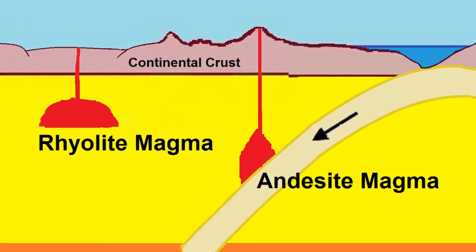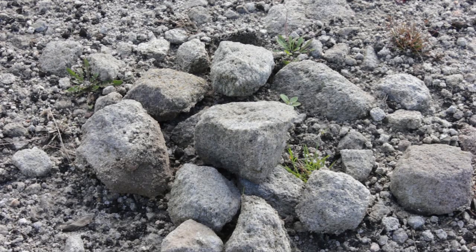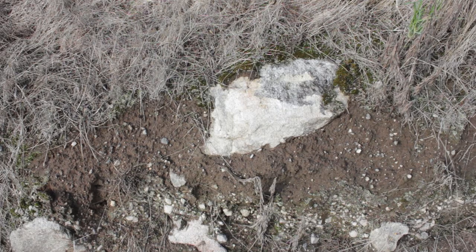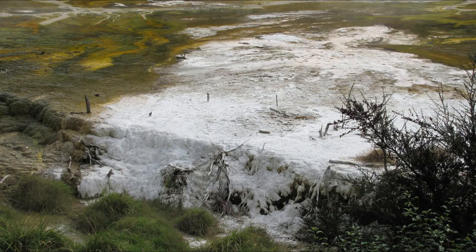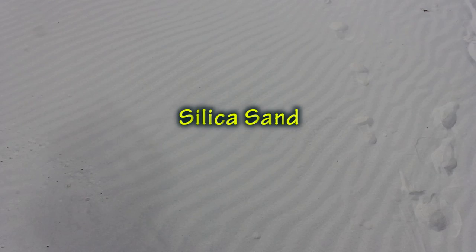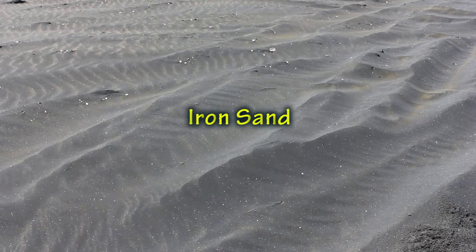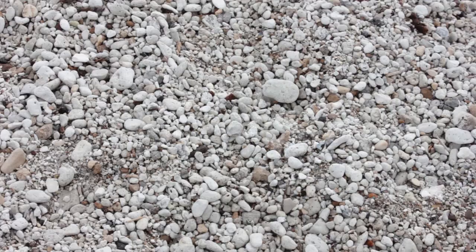Rhyolitic magma forms close to the surface and is relatively cool and silica rich. Rhyolitic magma is described as acidic. Rhyolite is light coloured or white — a clue that the rock contains a lot of silica, more than 70%, and not much iron. Pumice, for example, is a light type of rhyolitic rock.